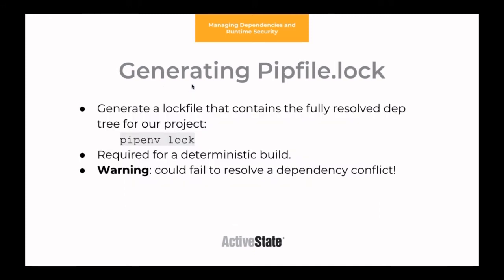The next stage is generating a lock file. This is the fully resolved dependency tree for your project. You would run pipenv lock, and this is required for a deterministic build — because if we don't run this, we have an issue with possible dependencies of the packages we have getting updated and all that kind of stuff.